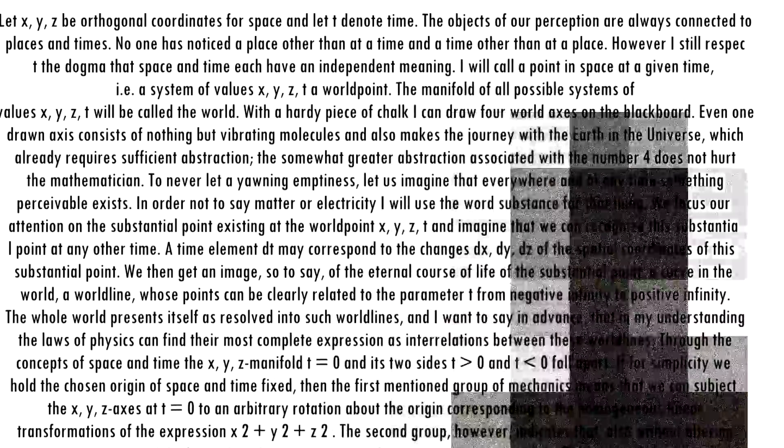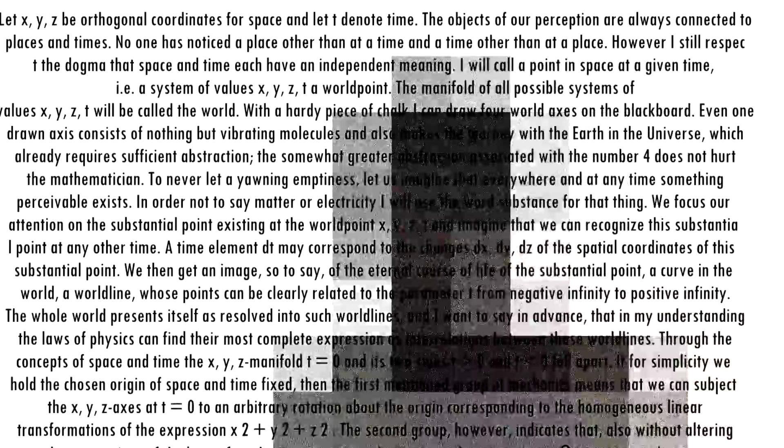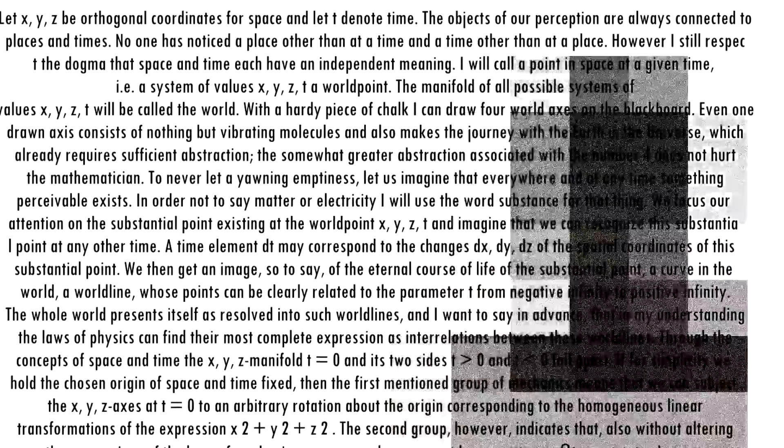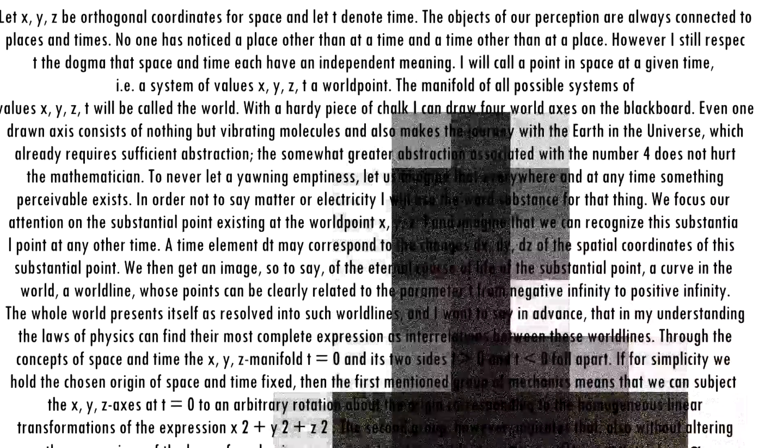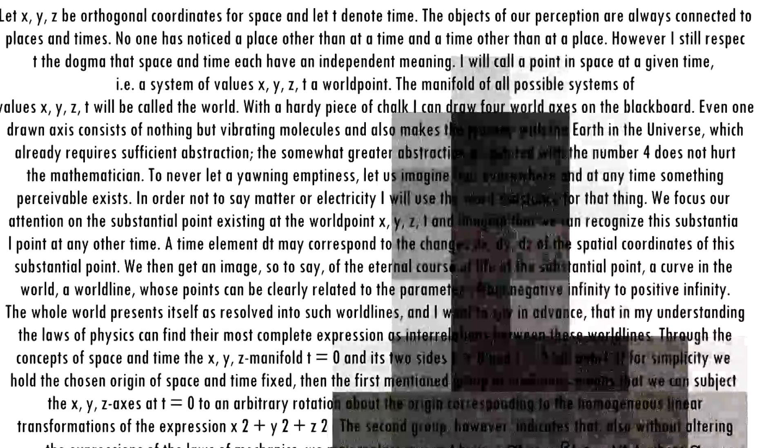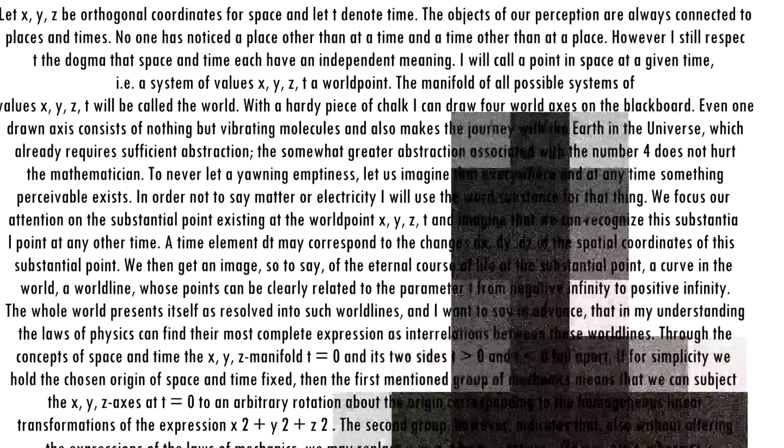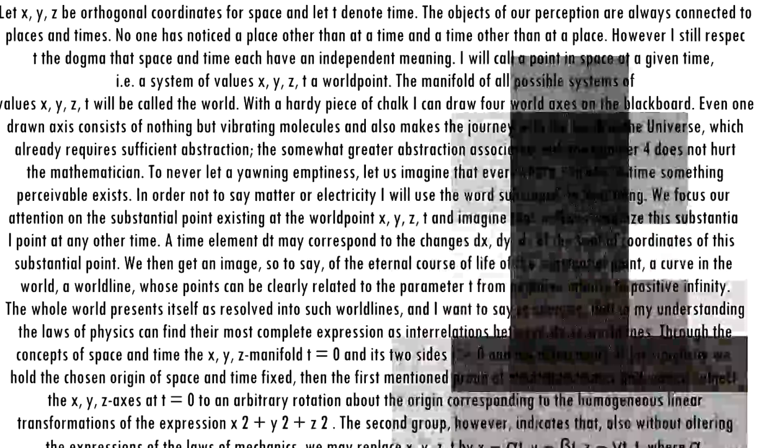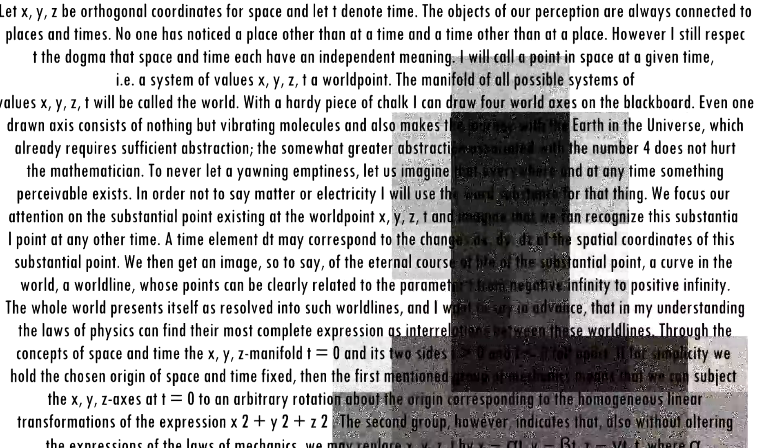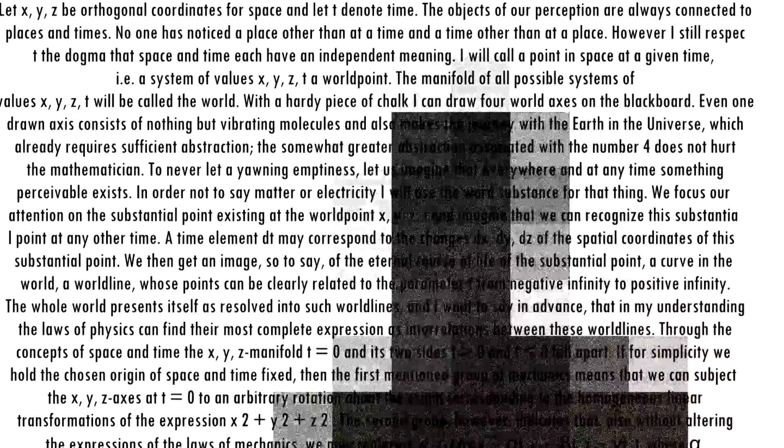Let x, y, z be orthogonal coordinates for space and let t denote time. The objects of our perception are always connected to places and times. No one has noticed a place other than at a time, and a time other than at a place. However I still respect the dogma that space and time each have an independent meaning.